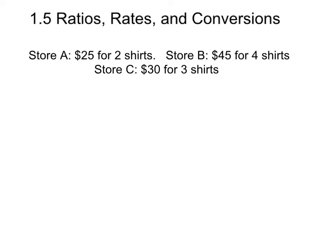Now, this should be very easy. You can write each as a ratio. For example, you could write 25 divided by 2, 45 divided by 4, and 30 divided by 3. This should be review. As you know, in order to compare, you would have to find the price per shirt from each store. So if you, for example, did Store A, $25 divided by 2, that gives you $12.50 per shirt.